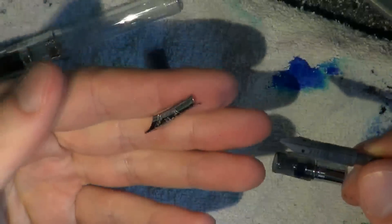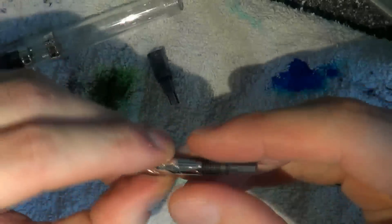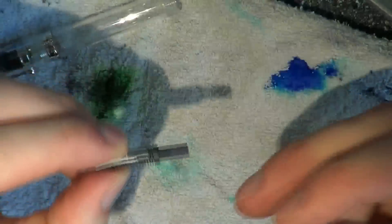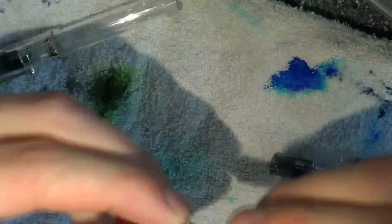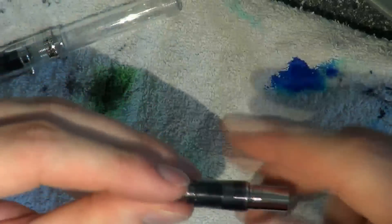Take the nib and feed, rinse them well, clean them well. Once you are done, you will notice the nib slides into place onto the feed. Put it into the nib collar any way you like. There's no specific way to do it. Screw it back into the section.